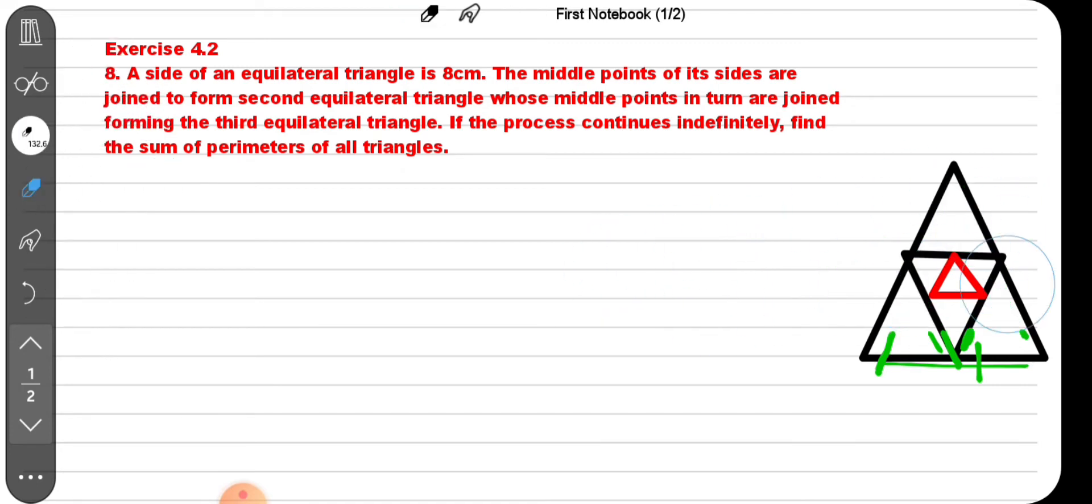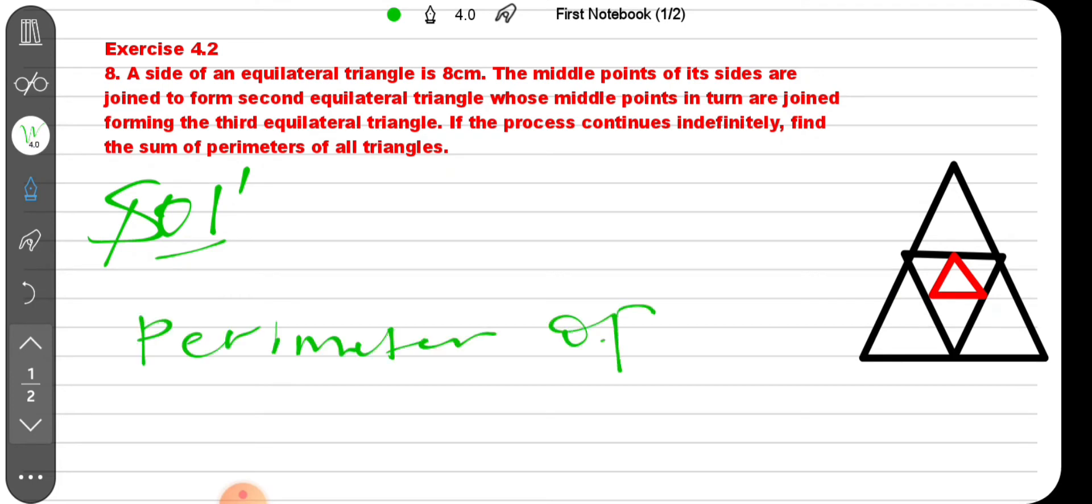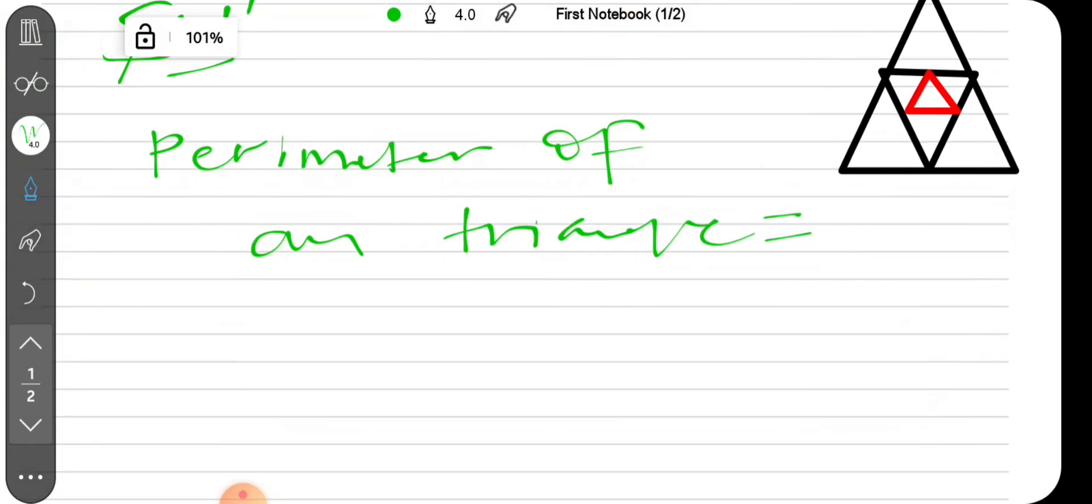The perimeter of an equilateral triangle equals 3 times L. So for the first triangle, it's 3 into 8, which equals 24 centimeter.